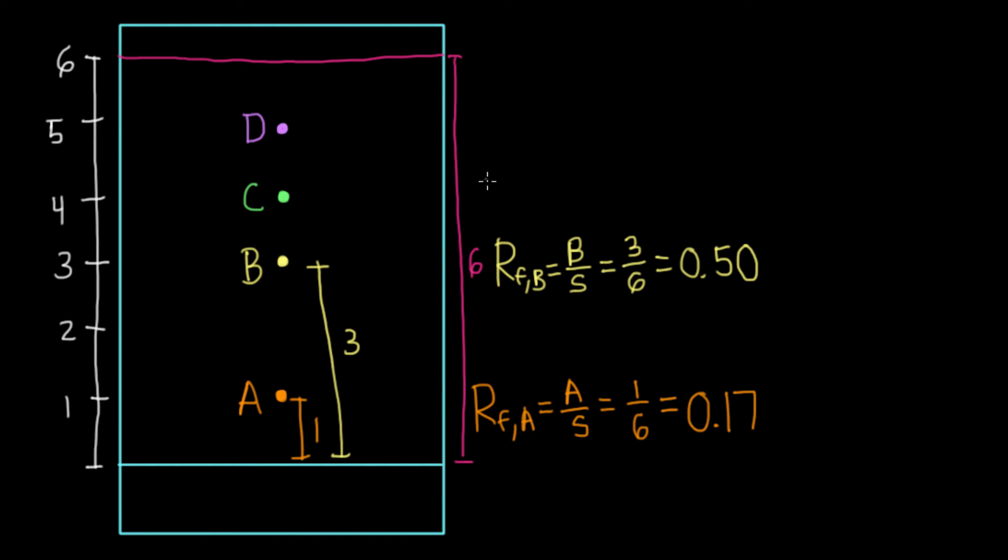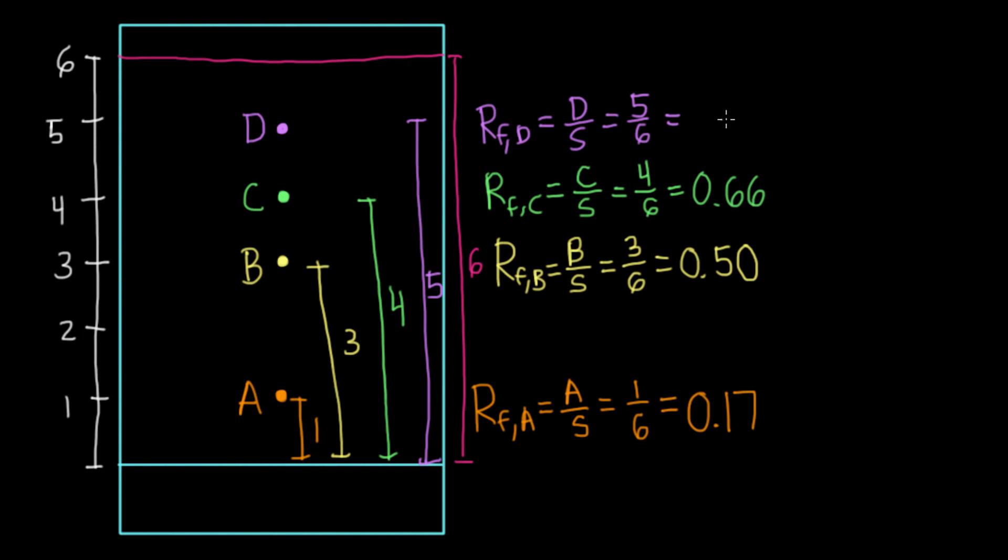Next, we'll measure this for C. The RF of C is equal to the distance traveled by C over the distance traveled by S. The distance traveled by C is four, so that's going to be four over six, which is equal to 0.66. And lastly, for D, again, we'll have to measure the distance traveled by D over distance traveled by S. In this case, this distance is five, so this would be five over six, which is equal to 0.83.